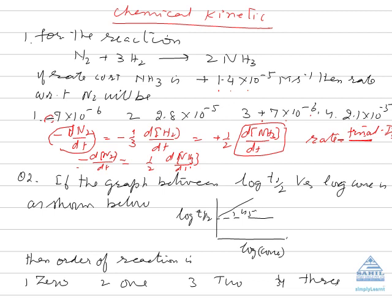The order of reaction is the powers to which the concentration terms must be raised in order to determine the reaction rate. The order of reaction can be 0, first, second, or third. These orders can be predicted from the half-life period, from the graph between concentration versus time, or by the Ostwald dilution law.